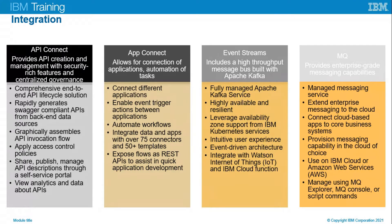API Connect provides comprehensive end-to-end API lifecycle solutions that allow automated creation of APIs. We can rapidly generate Swagger-compliant APIs from back-end data sources, graphically assemble API invocation flows, and apply access control policies. You can also share and publish, as well as manage API descriptions through a self-service portal. In terms of analytics, you can view different analytics and individual data about your APIs with API Connect.